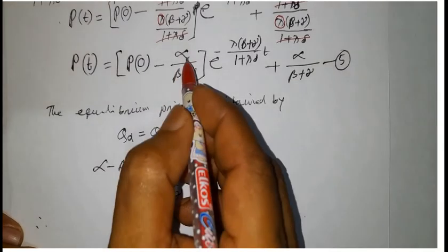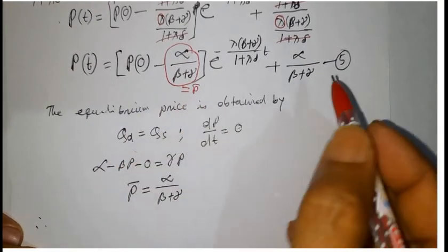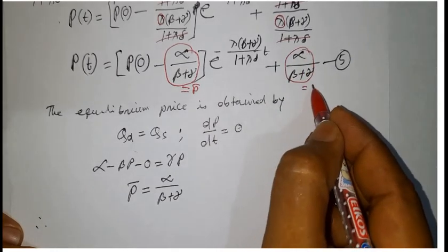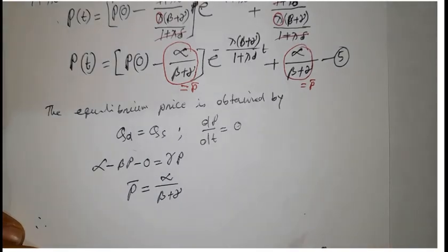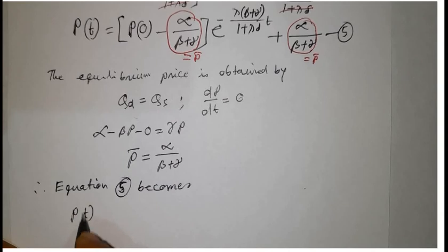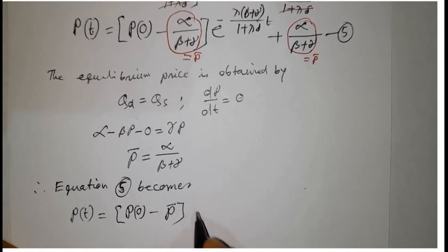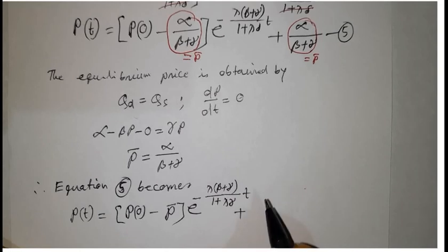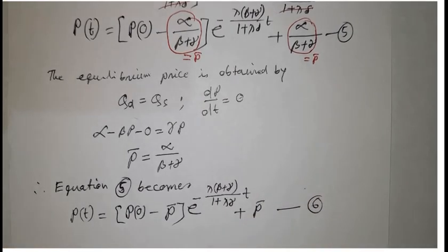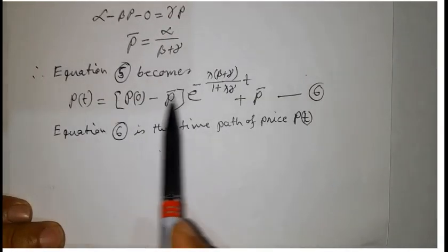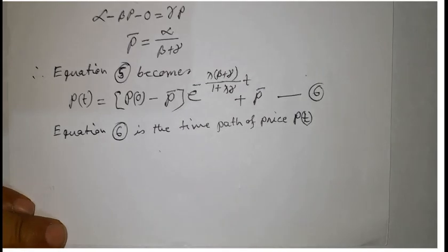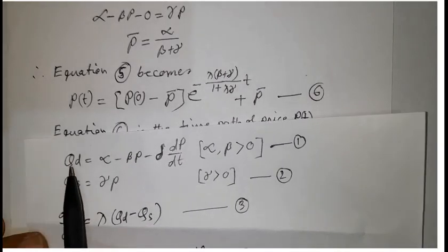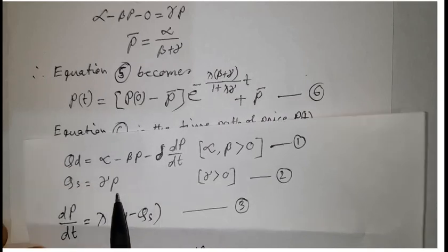Therefore, in equation 5, the term alpha/(beta plus gamma) is equal to P-bar. So equation 5 becomes P(t) equal to (P_0 minus P-bar)·e^(minus lambda·(beta plus gamma)/(1 plus lambda·delta)·t) plus P-bar. This is equation number 6, which is the time path of price P(t) for the given demand and supply functions, where the rate of change in price is proportional to excess demand with adjustment coefficient lambda.